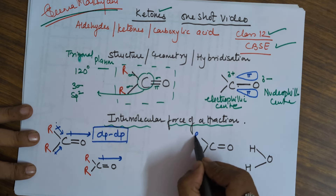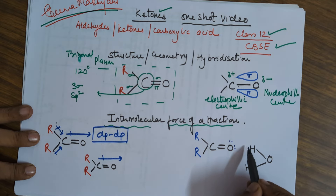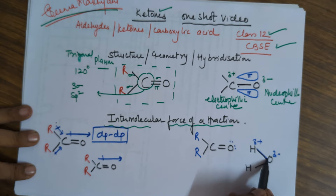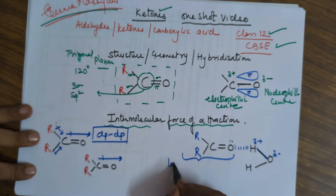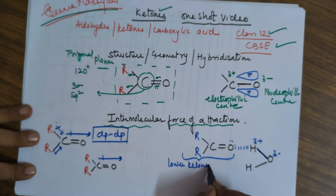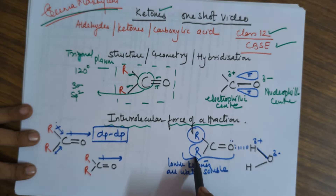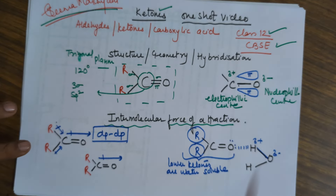When we talk about a ketone in water, there is definitely a chance of this hydrogen — which has a delta positive charge owing to the polarity of this bond — being attracted towards oxygen of the ketone, and your ketone may become soluble in water. But that is only true if the R group is small, so we say your lower ketones are water-soluble. If the R group increases, the hydrophobic part increases and the solubility goes on decreasing.